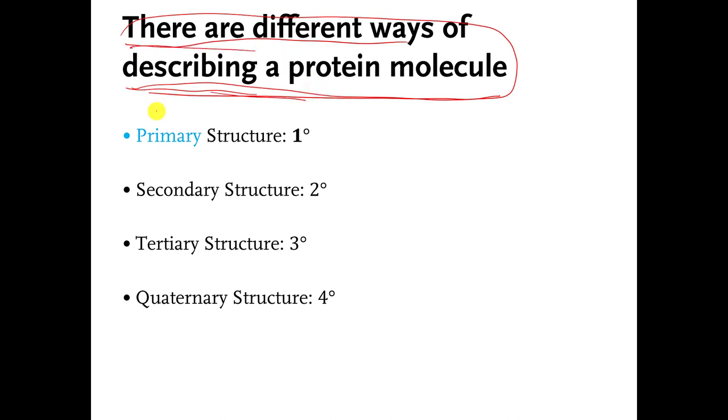Usually the ways of describing a protein molecule are referred to as describing the primary structure of a protein molecule, and that is abbreviated with the number 1 and a little degree symbol. Or describing the secondary structure of a protein molecule, that's written with the number 2 and a degree symbol, tertiary structure, and quaternary structure.